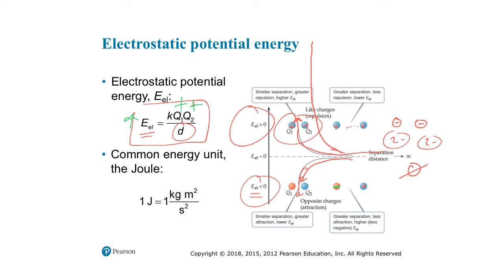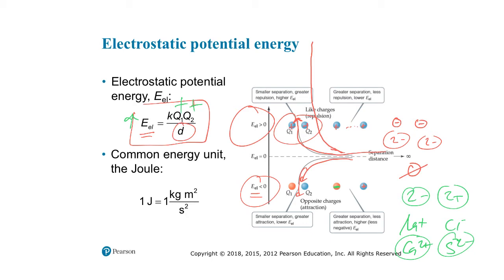The common unit of energy is the joule — a kilogram meter squared per second squared — which is our SI unit of energy relating back to the fundamental SI units of kilograms, meters, and seconds.